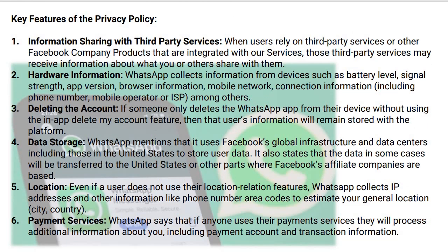Let us understand what the key features of the privacy policy are. When we talk about the privacy policy, one key feature is information sharing with third-party services. When users rely on third-party services or Facebook company products, those third-party services may receive information about what you or others share with them. For example, if you share your location on WhatsApp with someone — say you're outside and you send your location to your parents — that location will be shared not just with your parents, but also with WhatsApp, and also with Facebook, and Facebook can send your location to third parties unknown to you. So your privacy is at risk.